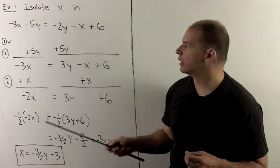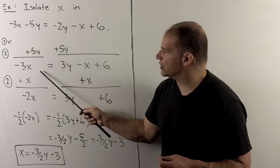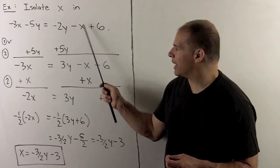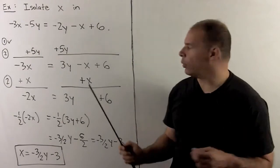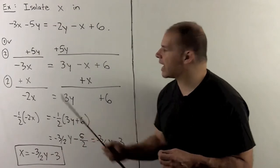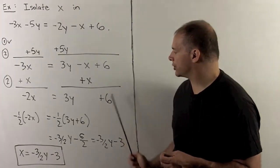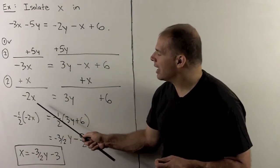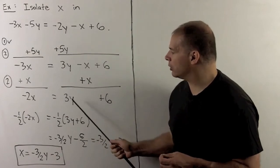We work it out the long way. We add 5y to both sides — minus 5y and plus 5y go to zero. Minus 3x stays. Minus 2y plus 5y gives 3y. Minus x and 6 come down. Then I move minus x to the other side as plus x by adding plus x to both sides. Minus x and x give zero; 6 and 3y stay; and minus 3x plus x gives minus 2x. Now x terms are on one side, non-x terms on the other.